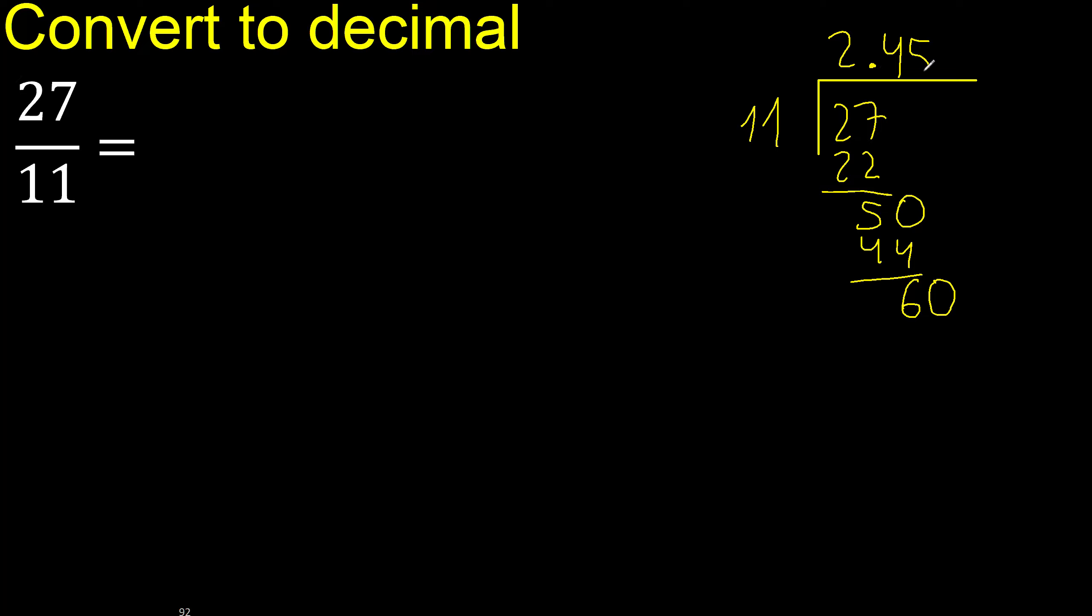11 multiplied by 5 is 55. Subtract complete, 11 multiplied by 4, subtract complete, 11 multiplied by 5, subtract complete, 11 multiplied by 4. Here, repeat, therefore repeat.